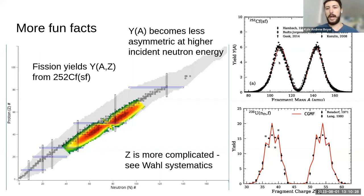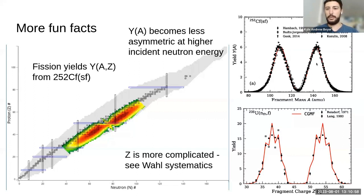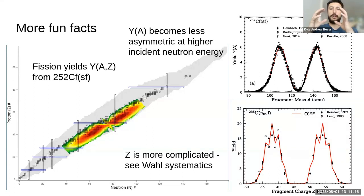If we look at just fragment mass — the figure in the upper right — we see there are two peaks, right? Fission happens sort of asymmetrically. We've observed this many, many times. We see something similar for fragment charge, although fragment charge is a lot more complicated than just the fragment mass yields. Also worth mentioning: this picture of fragment mass yields is for spontaneous fission of Californium-252. For induced fission, especially by really energetic neutrons, you can have a very excited target nucleus, and that can cause symmetric fission — the mass yield becomes more symmetric at high incident energy.